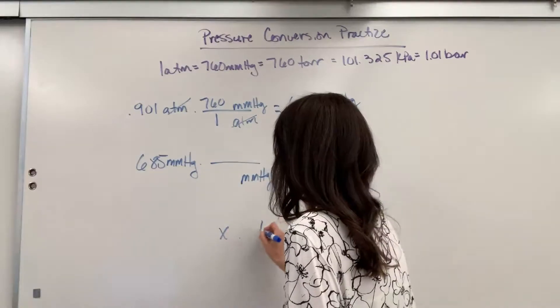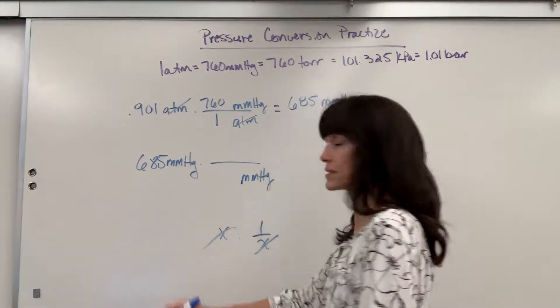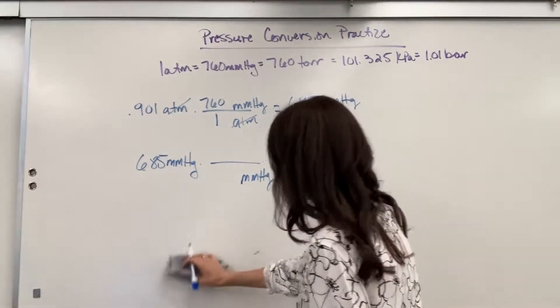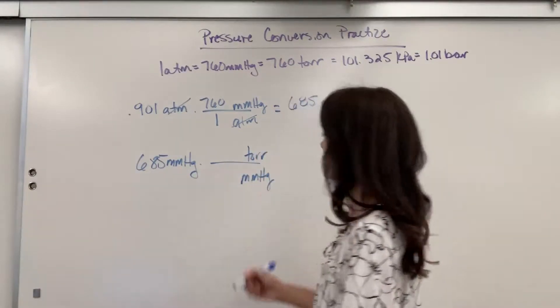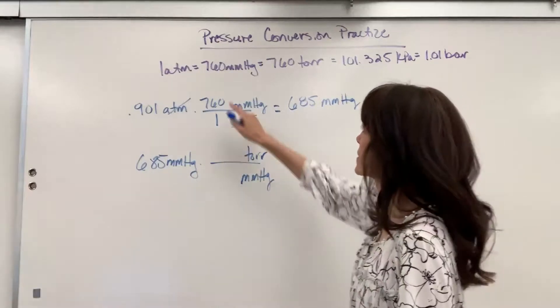Just like if I had x times 1 over x, the x's cancel. So millimeters of mercury in the denominator, and I want torr in the numerator. Okay, let's attach our numbers.